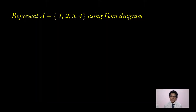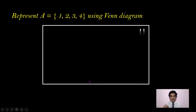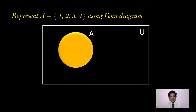Example: Represent set A = {1, 2, 3, 4} using a Venn Diagram. First draw a rectangle and indicate capital U — this is the Universal Set. Then draw a circle inside and name it A. Write the elements 1, 2, 3, and 4 inside that circle. That's all — it is very simple. This is how you draw a Venn Diagram for a given set.